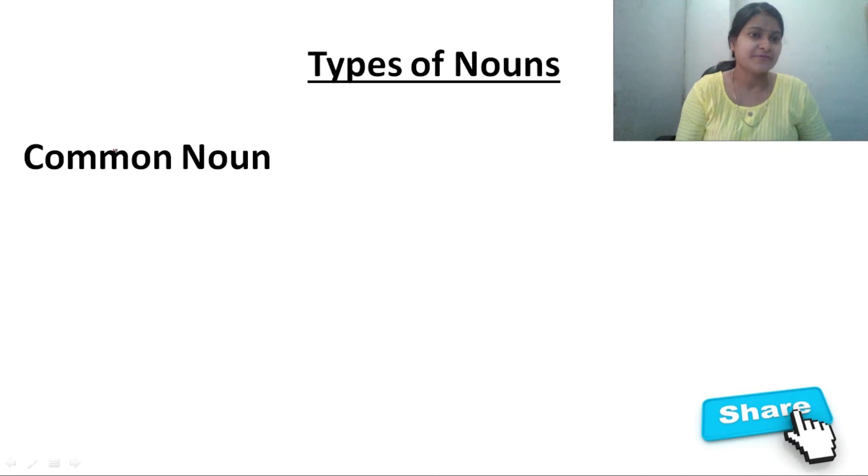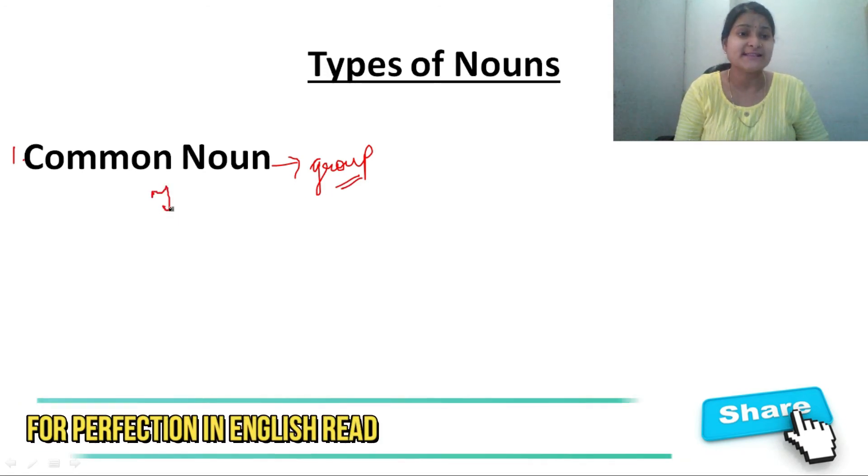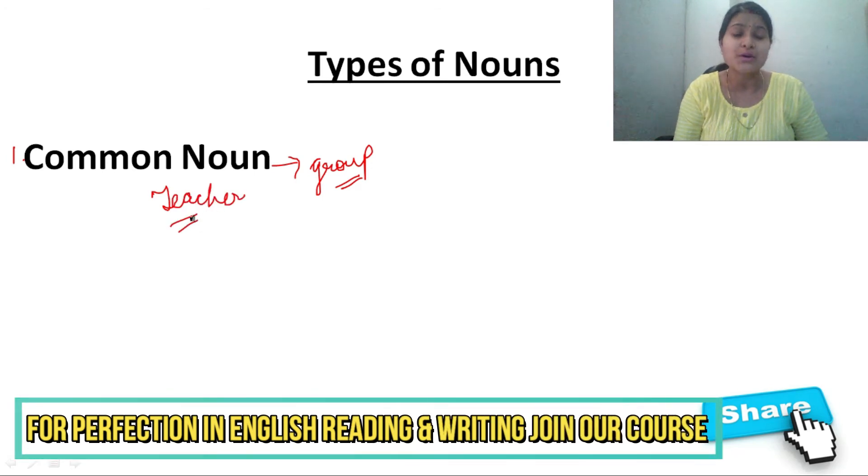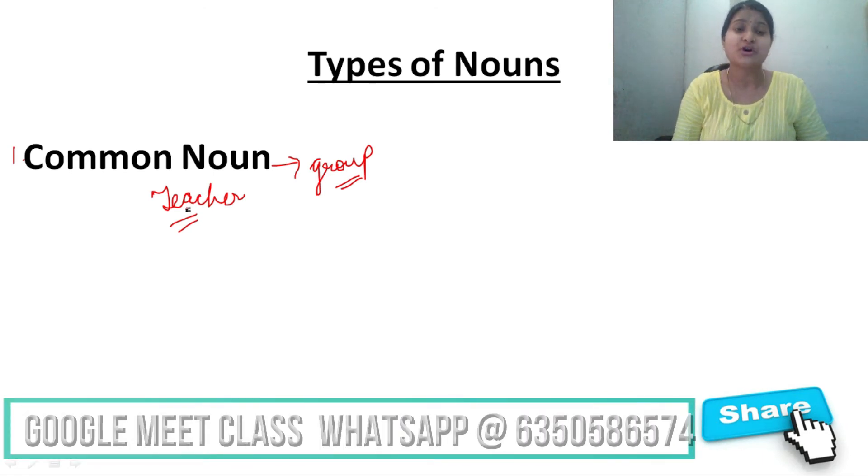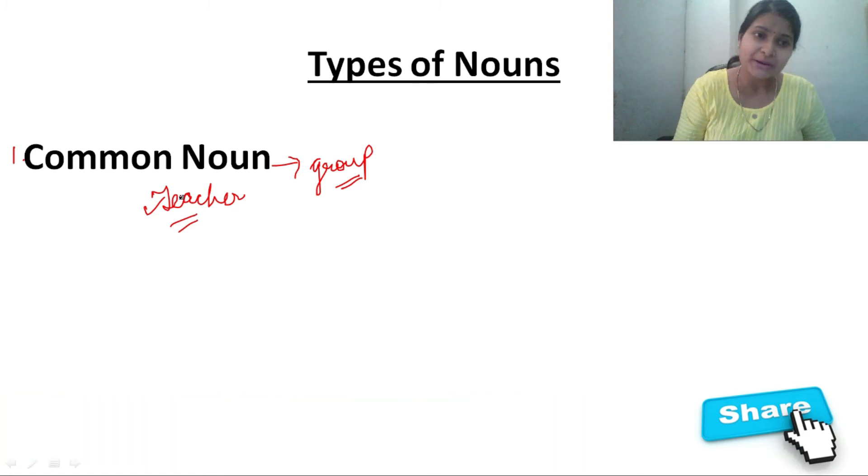That is common noun. First type is common noun. Do you know what is common noun? Common noun is the name of person, place, animal, thing which we take to indicate a group. When we take these names to indicate a group, it is called common noun. Such as when we say teacher, so teacher is a common noun because here I am your English teacher, you must be having your math teacher, your science teacher, your Hindi teacher.